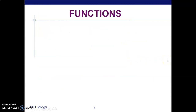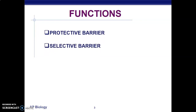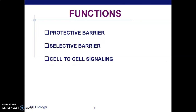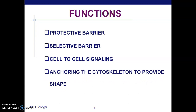The cell membrane is a protective barrier — it protects the structure of the cell. This barrier is selective: it allows some things to enter the cell and does not allow others. It also allows cell-to-cell signaling or communication, and the cell membrane anchors the cytoskeleton.